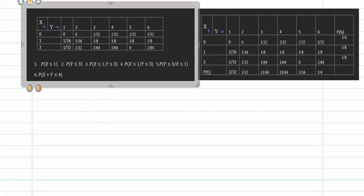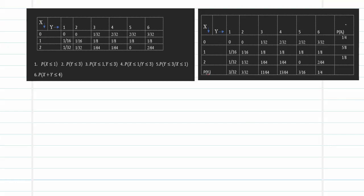Having estimated the marginal values, p(x) is found by keeping X = 0 fixed and adding along the row. Keep X = 1 fixed and add along the row to get 5/8. Keep X = 2 fixed and add along the row to get 1/8. Use the A B/C button on your calculator to effectively estimate fractions.